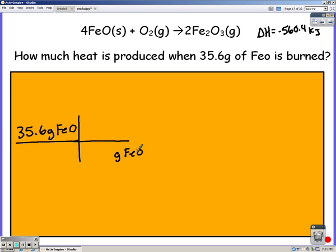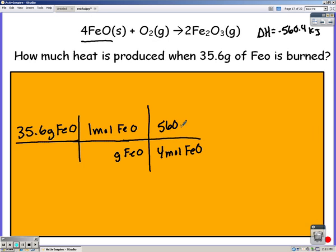If not, we started with 35.6 grams of FeO. Converted it to moles. And every 4 moles of FeO is 560.4 kilojoules. We need to add our molar mass of FeO. You should have gotten 72. If the moles multiply and divide correctly you get 69.3 kilojoules.